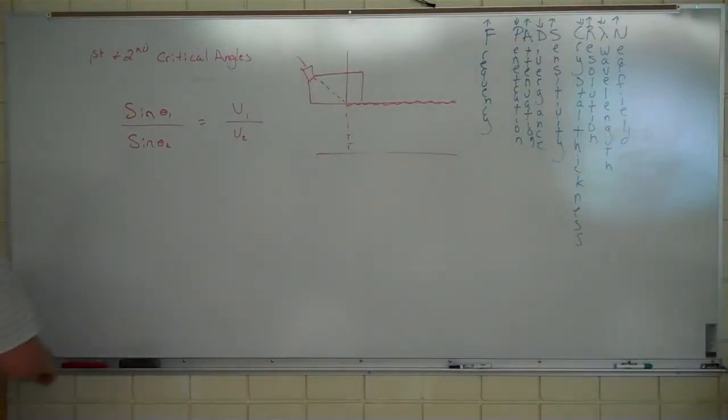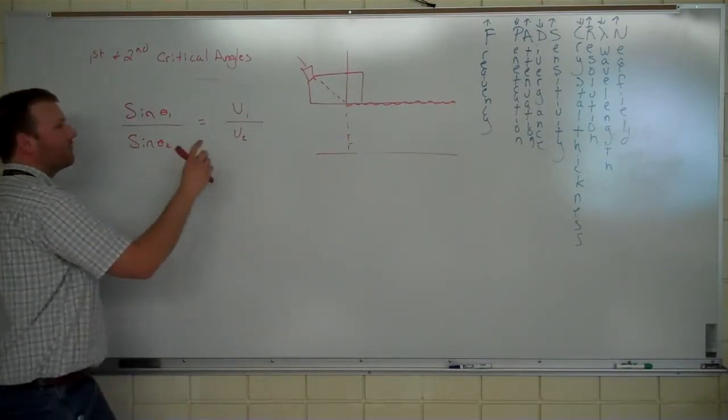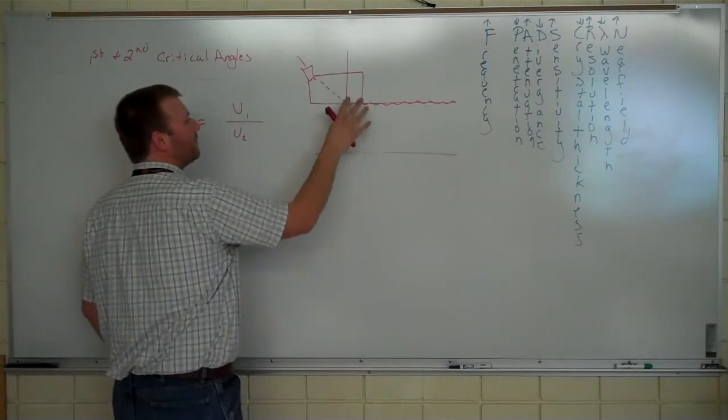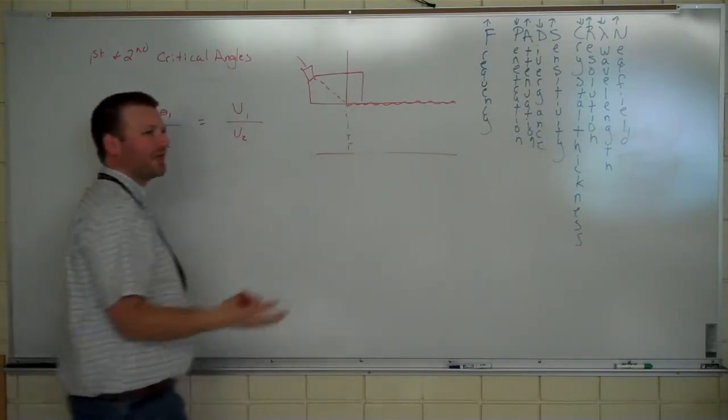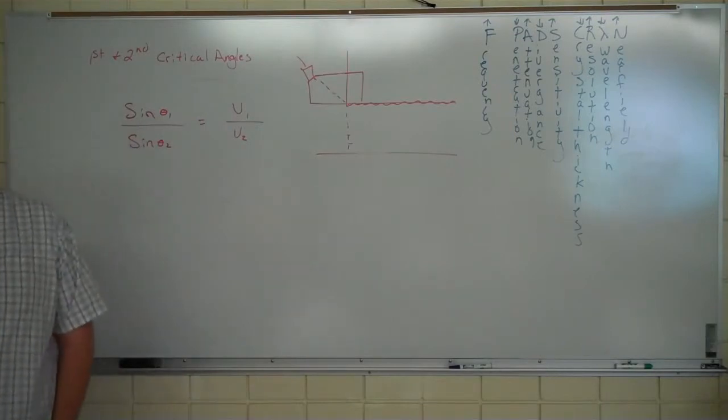Alright, first and second critical angles. So we just did Snell's Law, and now we're going to do first and second critical angles, meaning using the Snell's Law formula. If we are looking for a first critical angle, we're looking for where the longitudinal wave has been reflected out, or at least refracted to 90 degrees, right?